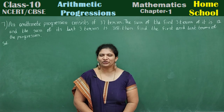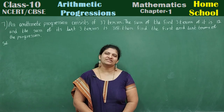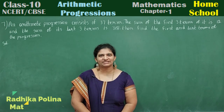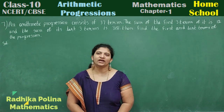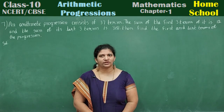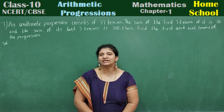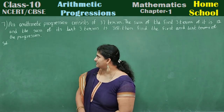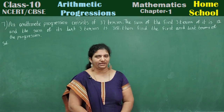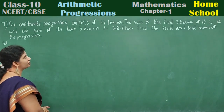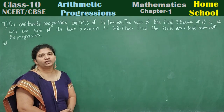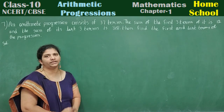Hi, hello, welcome to Home School. This is your Class 10 Mathematics NCERT or CBSE Board. We are in Chapter 1, Arithmetic Progression, application problems, and this is problem number 7. An arithmetic progression consists of 37 terms.